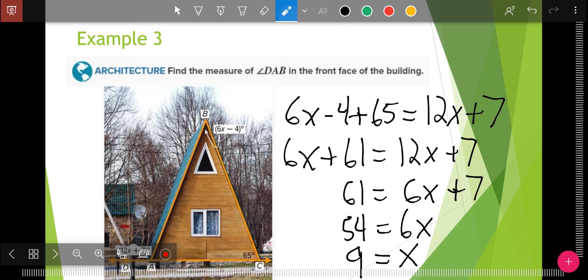I'm kind of out of space, but I also want to point out what it asked for was the measure of angle DAB. Angle DAB is this angle on the outside, 12x plus 7. So to find the measure of angle DAB, I have to plug that 9 back in. 9 times 12 is 108. Plus 7 is 115. So that is my answer. It's 115 degrees for this angle DAB.